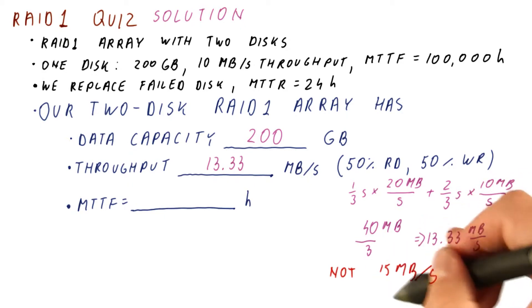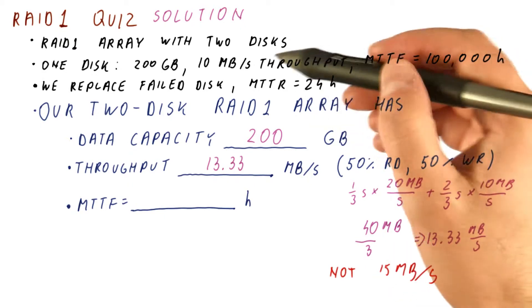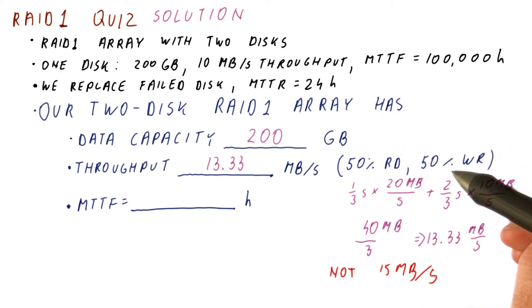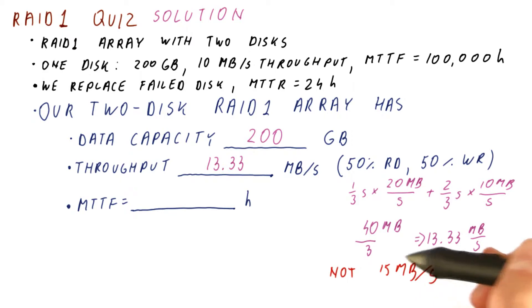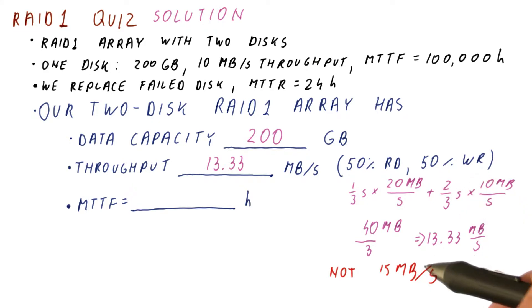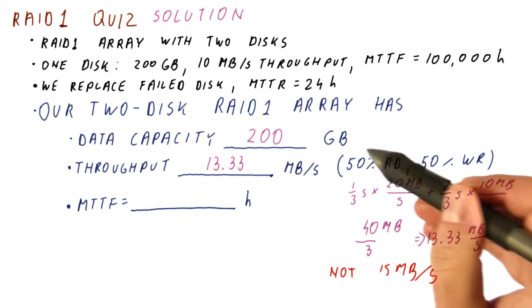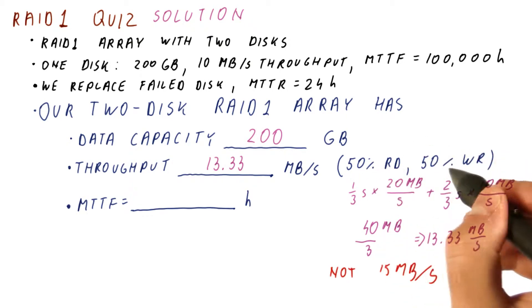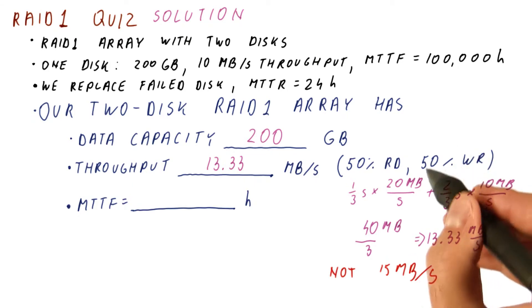Note that the throughput is not 15 megabytes per second, which is what we would get if we simply average the read throughput and the write throughput we would get in this array. Because if we did this, we are assuming that for half a second we are reading, and then for half a second we are writing, and thus we get 15 megabytes read and written in a second. But if for half a second we read, and for half a second we write, we end up reading twice the amount of data that we would for writes. So if the workload is 50-50 in terms of number of accesses, then it's not also 50-50 in terms of time spent on reads and time spent on writes.